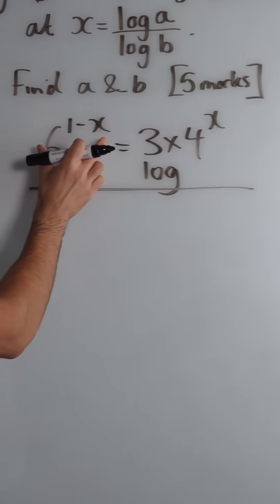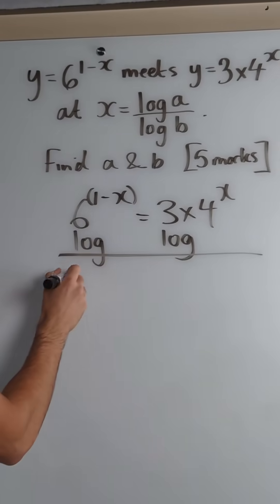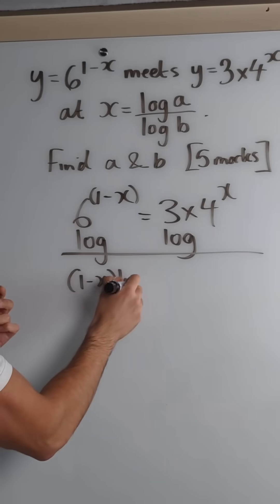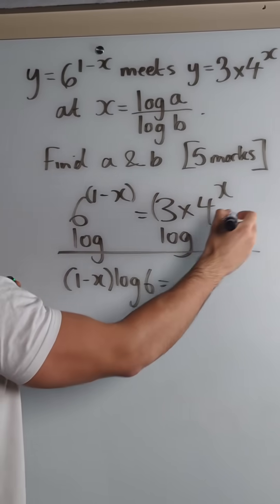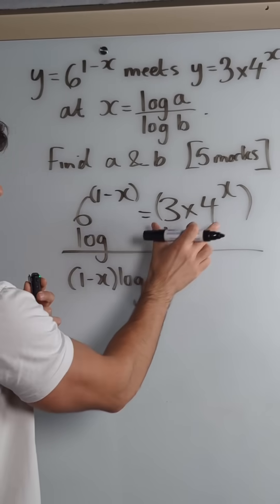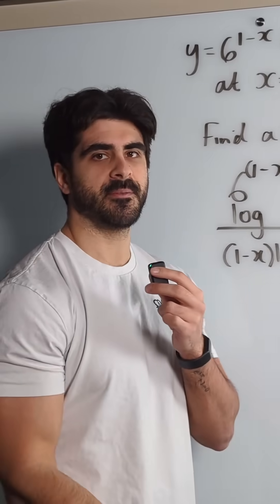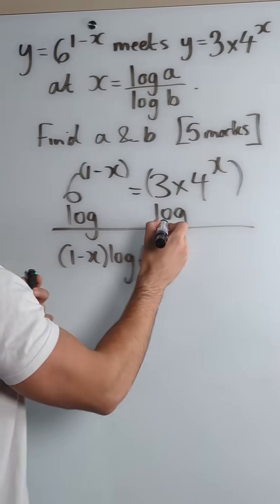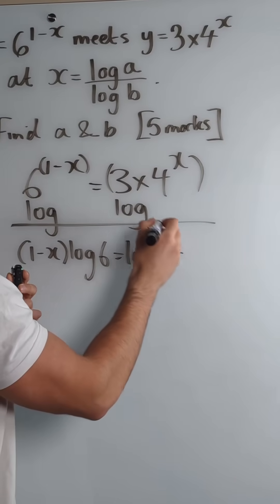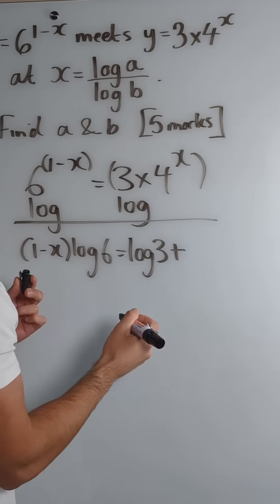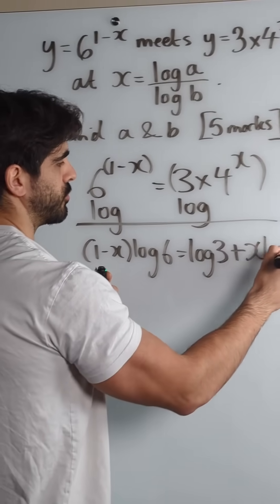We're going to get log of this, but at the same time this power we can bring down. So we're going to get (1 minus x) log 6, and here we're going to get log of all of this. Now if you have log of all of this, the multiplication means we can rewrite it as addition. So we're going to get log 3 plus log of 4 to the power of x, and that x can come down. So I'm doing a couple of log rules at the same time.